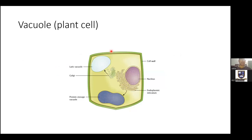The vacuole is a cell organelle not found in animal cells — it is only present in plant cells. Vacuoles basically store fluids and food for the plant cell. We have different types of vacuoles: lytic vacuoles and protein storage vacuoles — a peanut-shaped vacuole with proteins inside. Animal cells do not contain these vacuoles; they are only present in plant cells.